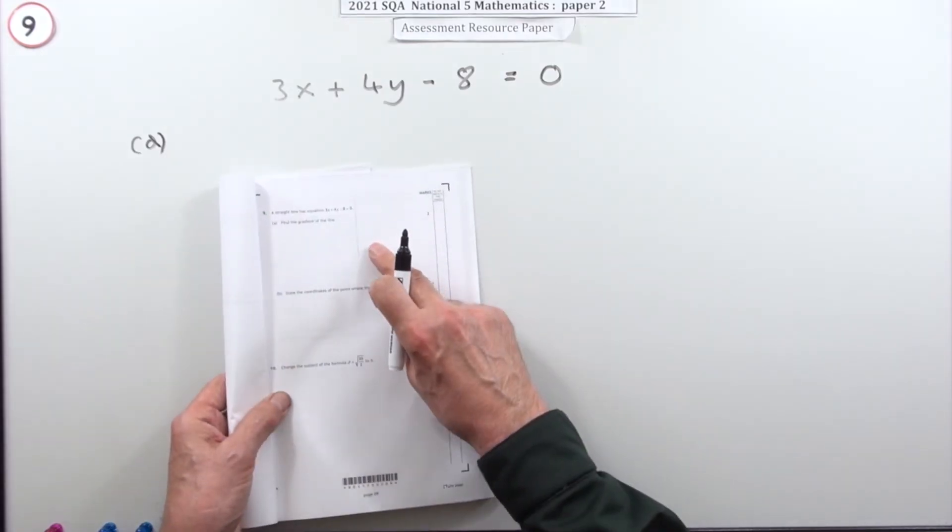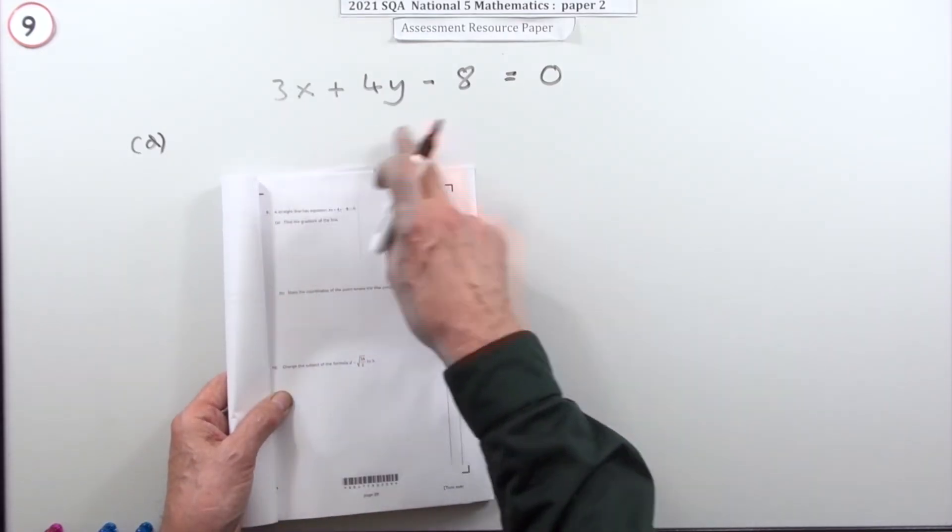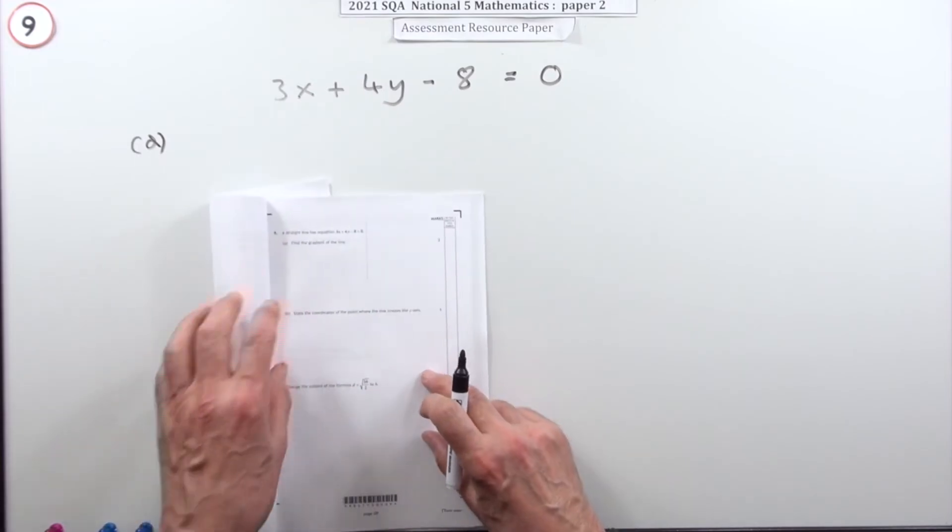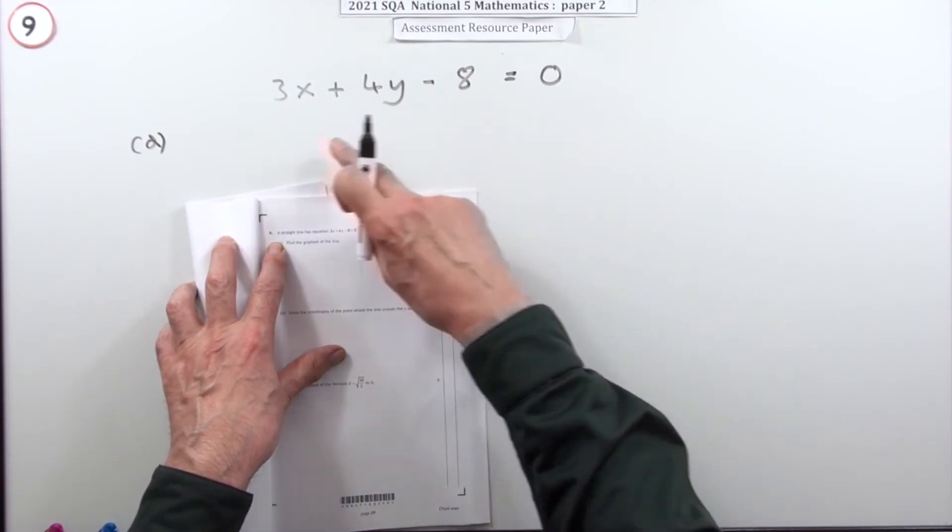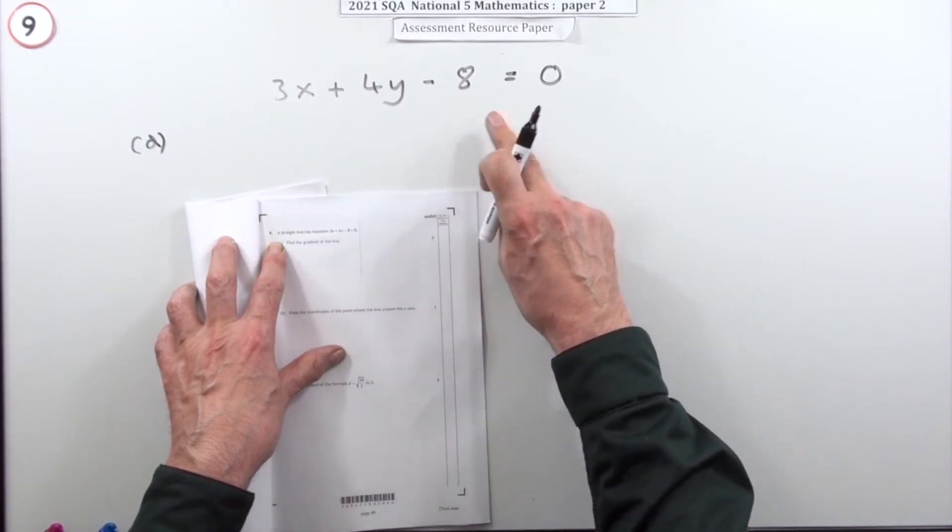Number nine - very straightforward little question here on the equation of a line for three marks. Here's the equation of a line written in that particular form, ax plus by plus c equals zero.